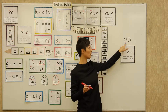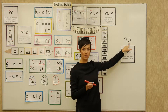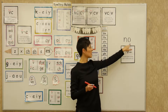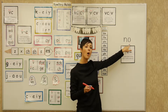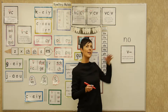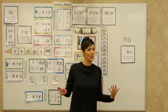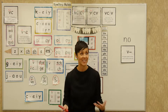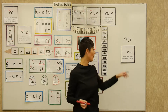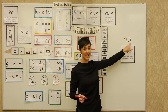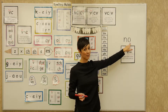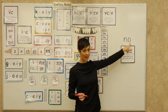So I show them a word like 'no,' and I tell them this word says 'no,' and I want you to notice that the O says its long sound. This letter O, you might notice, doesn't have anything after it. It's what we call an open vowel.